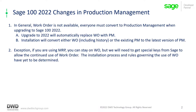If you are still using MRP, you can stay on work order — this is the one exception. But we would need to get special keys from Sage, and the installation process and the rules governing the use of work order have yet to be determined at this time.